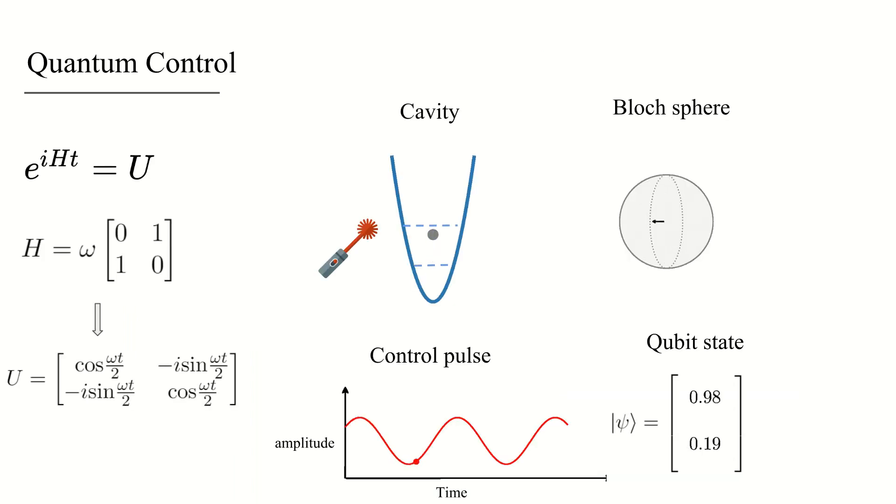On the other hand, long before quantum computing was born, physicists developed algorithms for controlling their quantum systems in the lab. They consider the problem of continuously driving the particles to the desired quantum states.